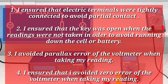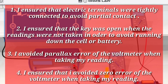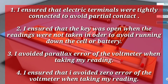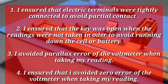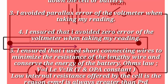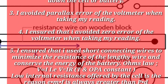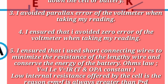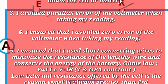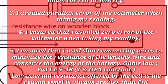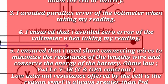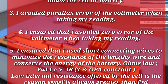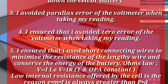3. I avoided parallax error of the voltmeter when taking my reading. 4. I ensured that I used short connecting wires to minimize the resistance of the wire and conserve the energy of the battery. 5. Ohm's law: V = IR, where temperature is constant. 6. The low internal resistance offered by the cell is the reason EMF is always greater than PD.